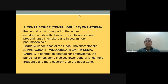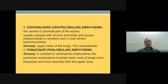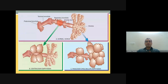Centrilobular emphysema involves the central or proximal part of the acinus. It usually coexists with chronic bronchitis and occurs predominantly in smokers and coal miners with pneumoconiosis. Grossly, the upper lobes are involved. In contrast, panacinar (panlobular) emphysema involves the lower zones more frequently and more severely; the entire acinus is involved — from terminal bronchiole through respiratory bronchioles to alveolar ducts.